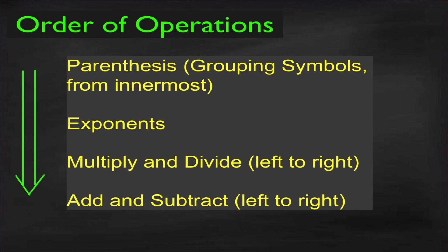First, the P stands for parentheses, which represents any grouping symbol — all operations within a grouping symbol. If there is more than one grouping symbol, we have to start working from the innermost one. The common grouping symbols are parentheses, square brackets or simply brackets, and braces or curly braces.